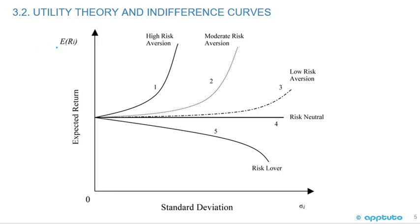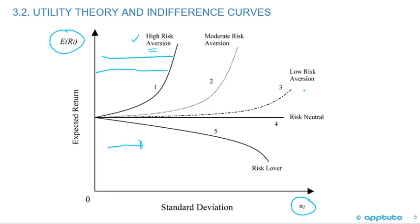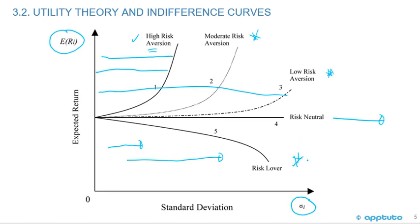Now we can graph utility theory in indifference curves. On the y-axis we have expected return and on the x-axis we have risk, measured by standard deviation. For high risk aversion, for very little increases in risk, the investor requires much higher expected return — a very steep upward curve. For low risk aversion, much greater increases in risk require much less increase in expected return. Moderate falls in between. Risk neutral is a straight line, and the risk lover's curve is actually downward sloping.